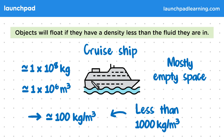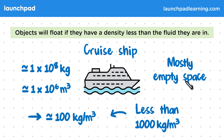For your exam, you won't need to recall these specific examples, but you could be asked to explain how objects are designed to make sure they float or sink. But why is it that when objects float, they will still be partially submerged, instead of being pushed out of the fluid completely?